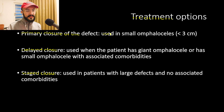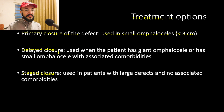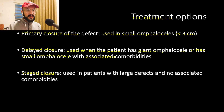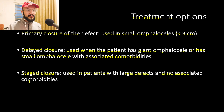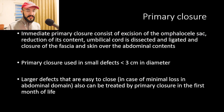Primary closure is used for small omphaloceles less than 3 cm in diameter. Delayed closure is used when the patient has a giant omphalocele or a small omphalocele with associated comorbidities. Staged closure is used when the patient has large defects with no associated comorbidities.